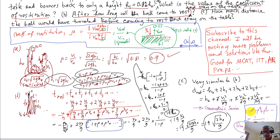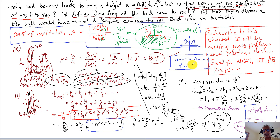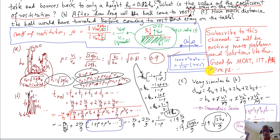We also used the geometric series: 1 + r + r² + r³ + ... = 1/(1 – r), valid for r < 1. Since the coefficient of restitution is less than 1, and ρ² < 1 as well, the geometric series converges and we can apply it. The third thing needed was one-dimensional motion under gravity — go back to the early chapters of mechanics to brush up on that.